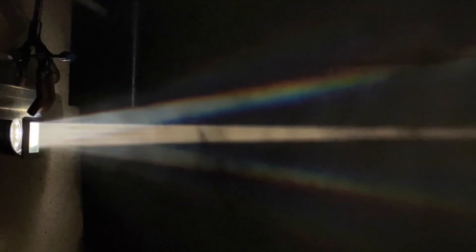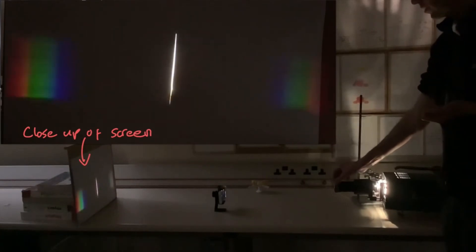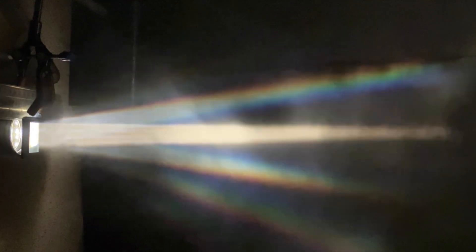Smoke reveals the beautiful spectra produced by white light shining through a diffraction grating. Normally this is demonstrated with the spectrum projected onto a screen, as I did in my earlier video, but the smoke spray provides something to reflect the light into our eyes or the video camera, allowing us to see the beams of light along their entire length.